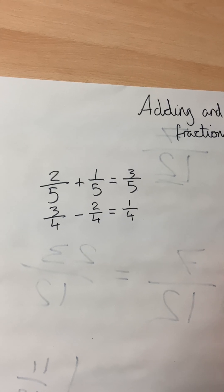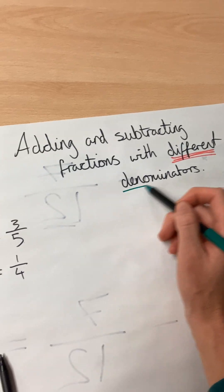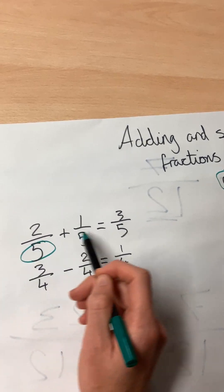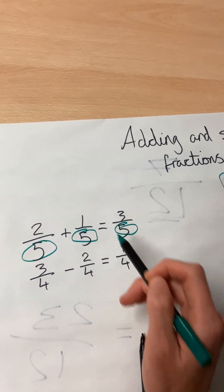Three-quarters minus two-quarters equals one-quarter. Nice and simple when the denominators, the number on the bottom, are the same.